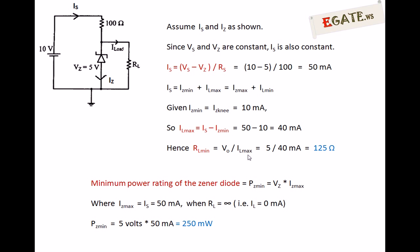Now for the minimum power rating of the Zener diode: the Zener diode should not break down while acting as a voltage regulator. We don't know whether the current through the Zener is minimum or maximum, so we must take the maximum Zener current as the tolerable limit. The minimum power rating is VZ multiplied by IZ_max. The Zener current is maximum when there is no load connected — when RL equals infinity, IL equals 0 mA, and the entire IS flows through the Zener. So IZ_max equals IS equals 50 mA. Therefore, minimum power rating PZ equals 5 volts into 50 mA equals 250 milliwatts.